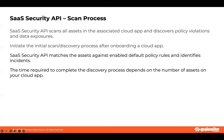After we add or onboard a cloud app, we need to initiate the scan — we call it the discovery process. The discovery process is a backward scan that scans all the assets in the cloud app. SaaS Security API scans all assets, discovers policy violations, matches assets against enabled default policy rules, and identifies incidents. As soon as the scan process identifies a violation, it populates the information in the SaaS Security dashboard, so you can start assessing incidents while the scan is in process.